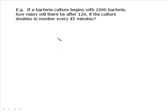So let's take a look at a few examples. If a bacteria culture begins with 2,000 bacteria, how many will there be after 12 hours if the culture doubles in number every 45 minutes? So this goes right into the formula and you make sure you make good decisions on this. n naught, the original amount, is equal to 2,000. t is the time elapsed. So this would be 12 hours.